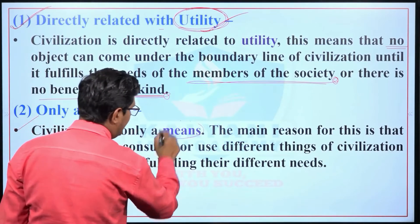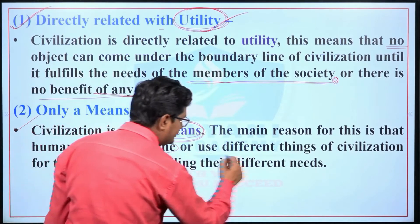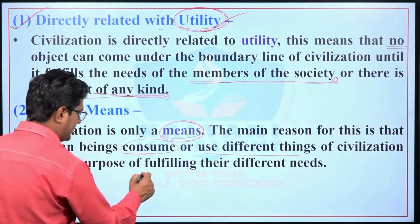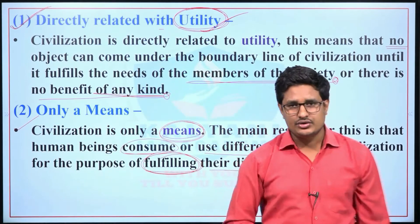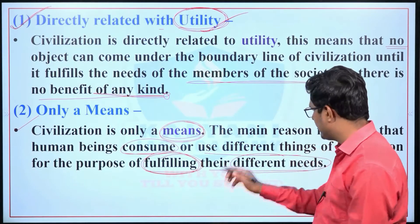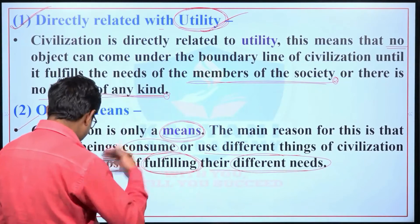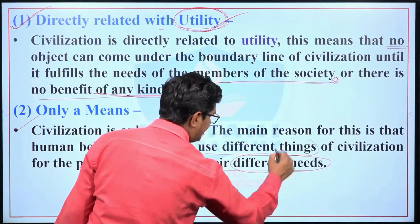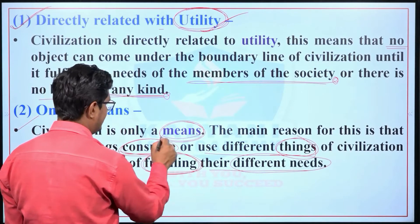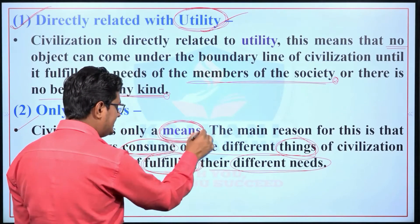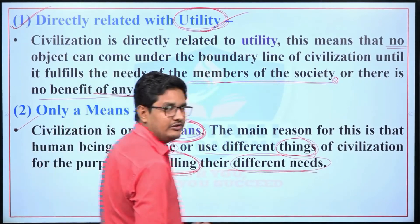Second characteristic: civilization is only a means. Human beings consume or use different things of civilization for the purpose of fulfilling their different needs. Through this means, human beings fulfill their various needs. So civilization is only a means through which human beings satisfy their different needs.